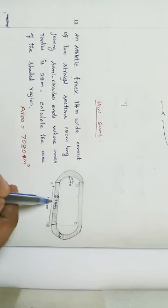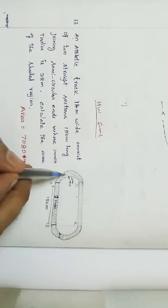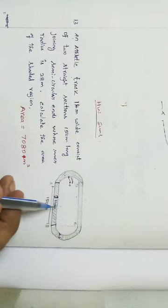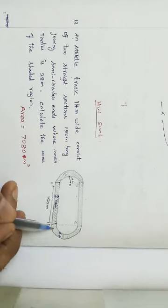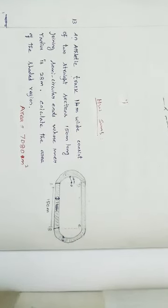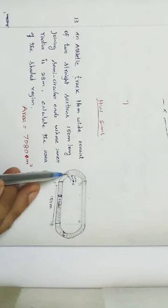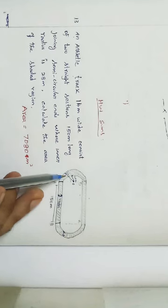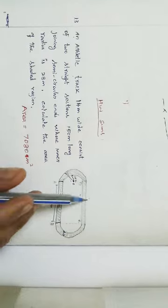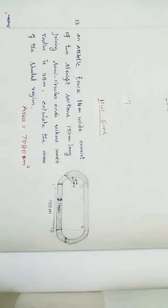The shaded track area consists of two rectangles and two rings (annuli). For each rectangle: length = 150 m, breadth = 14 m. For each ring: small radius r = 28 m, and big radius R = r + width = 28 + 14 = 42 m. Area = 2 × (area of rectangle) + 2 × (area of ring). Use this approach to solve the homework sum.